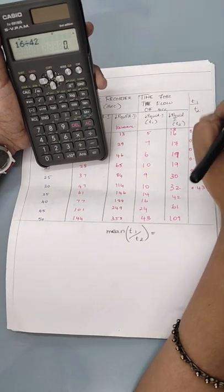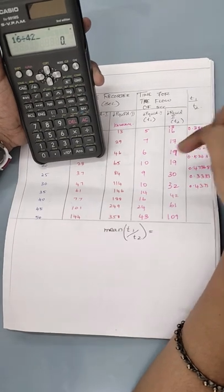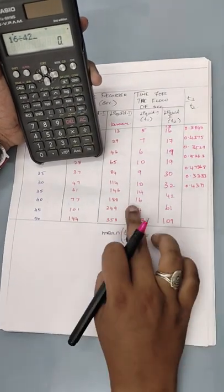Now I need to find the value for t1 by t3. So 5 divided by 13 is this value. 7 divided by 16 is this value. Likewise, let us see.